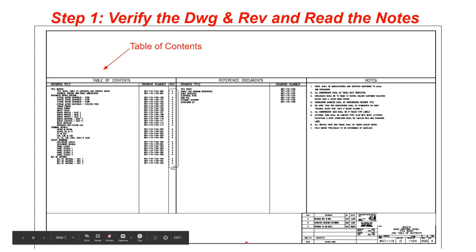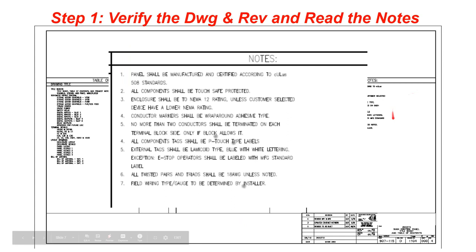From there you'll see the table of contents, which tells you what you're looking for and where it is in the drawing set. The notes section is something you really want to pay attention to — it's basically the ingredients of what we're using to make the drawing set. In this case it's following UL 508, and it gives you information on conductors, the enclosure, NEMA ratings, etc.